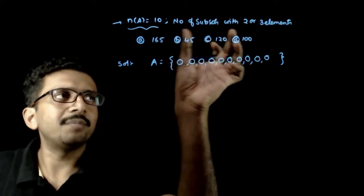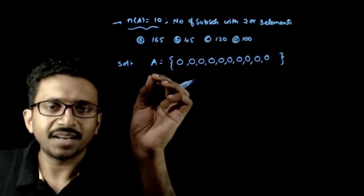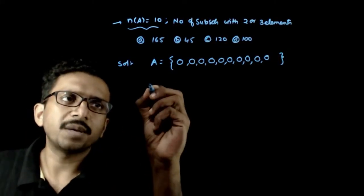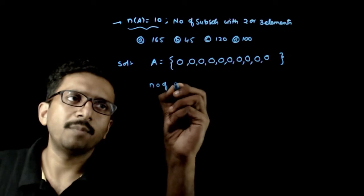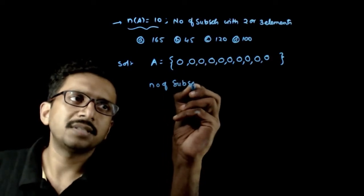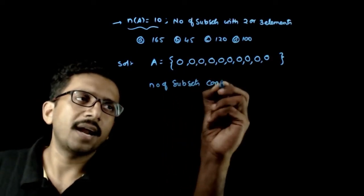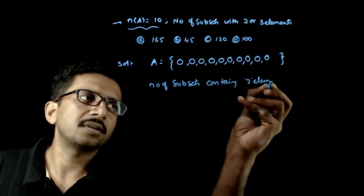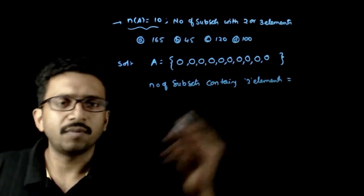You are asked to find the number of subsets of the set A containing 2 or 3 elements. Number of subsets containing 2 elements is equal to,